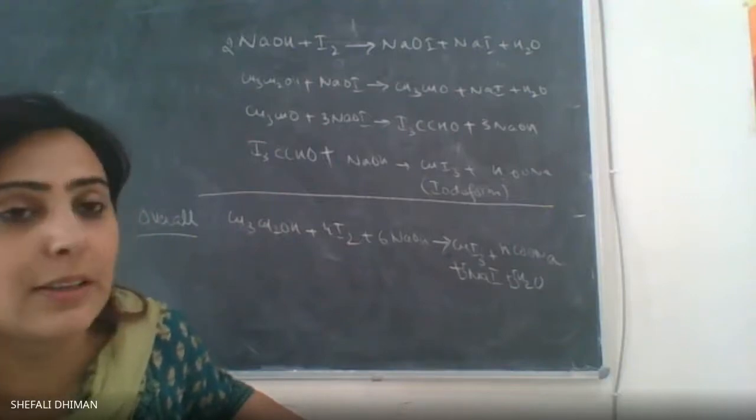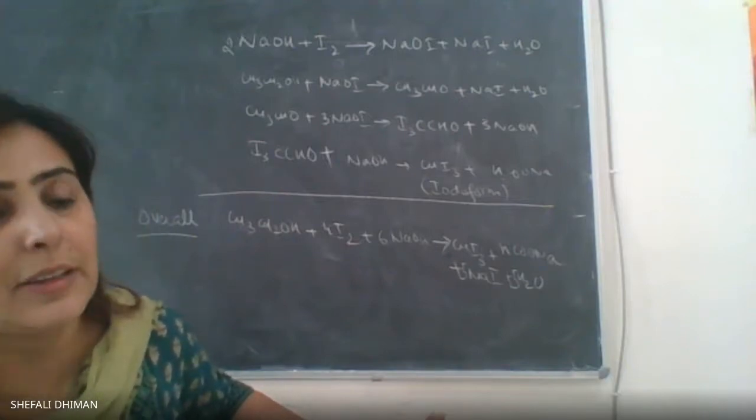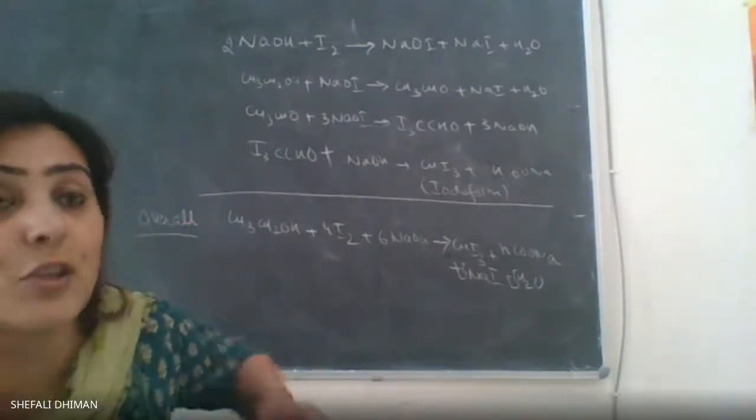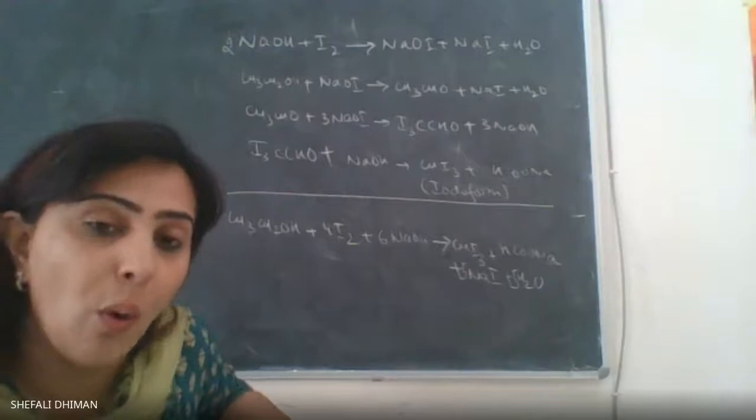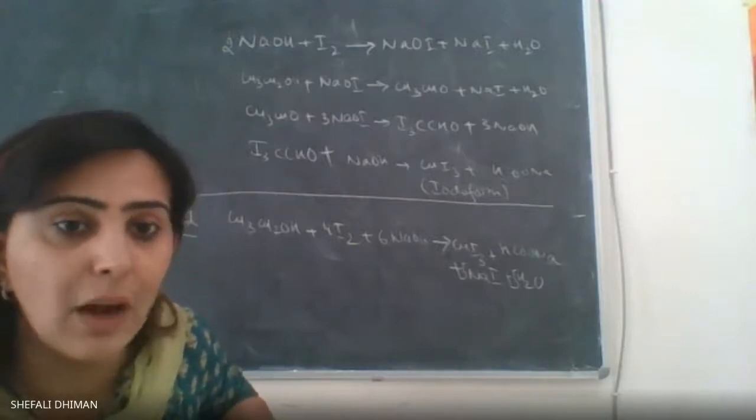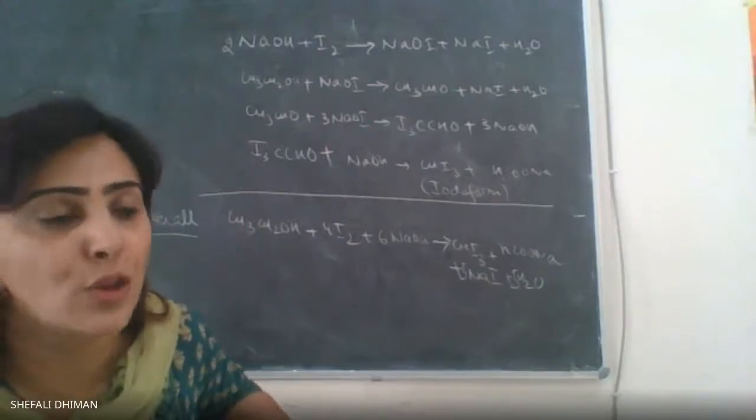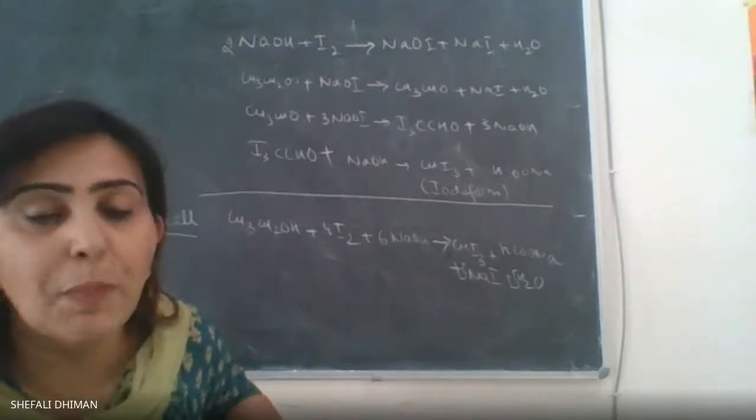After you've added acetone or ethanol, then you have to add slowly NaOH. We prepare six percent NaOH solution.